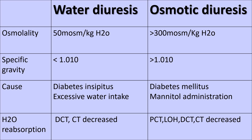In water diuresis, osmolality is very low — up to a maximum of 50 milliosmol per kg water. In osmotic diuresis, osmolality is more than plasma osmolality, greater than 300 milliosmol per kg water. Specific gravity in water diuresis decreases to less than 1.010, whereas in osmotic diuresis, specific gravity is more than 1.010.